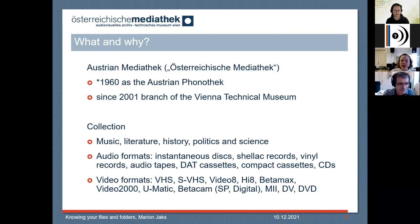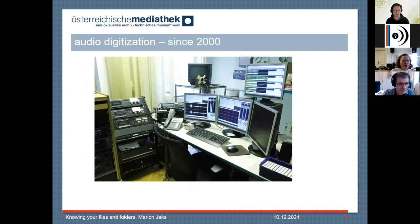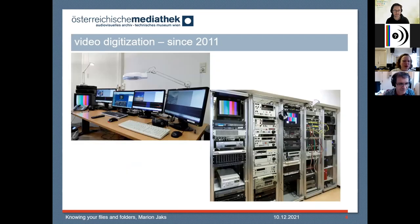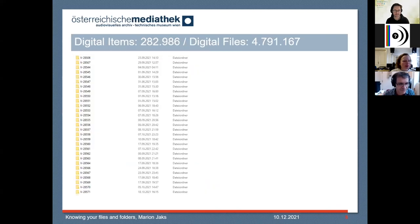What is the Austrian Mediathek? Just real quick — we were founded in the year 1960 as an audio archive, and since the year 2001 we are a branch of the Vienna Technical Museum and we became the national Austrian audio and video archive. Our audio digitization started in the year 2000 and video digitization since the year 2011, and with that we were one of the first users of FFV1, which was very controversial at the time. Over time, our digital archive grew to about 300,000 digital items.